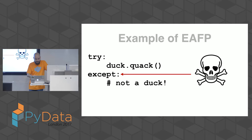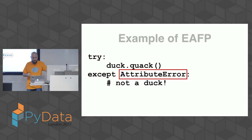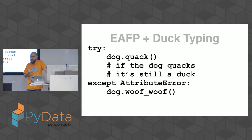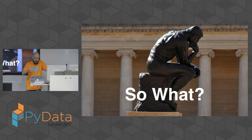A better approach is to capture only the specific exception — for example, an AttributeError if the duck object doesn't have the quack attribute, or a TypeError if needed. With duck typing: if we have an object that's not a duck — say it's a dog — but the dog can quack, we don't care. It's still a duck from our point of view. We focus on behavior and interface, not on what the object is.